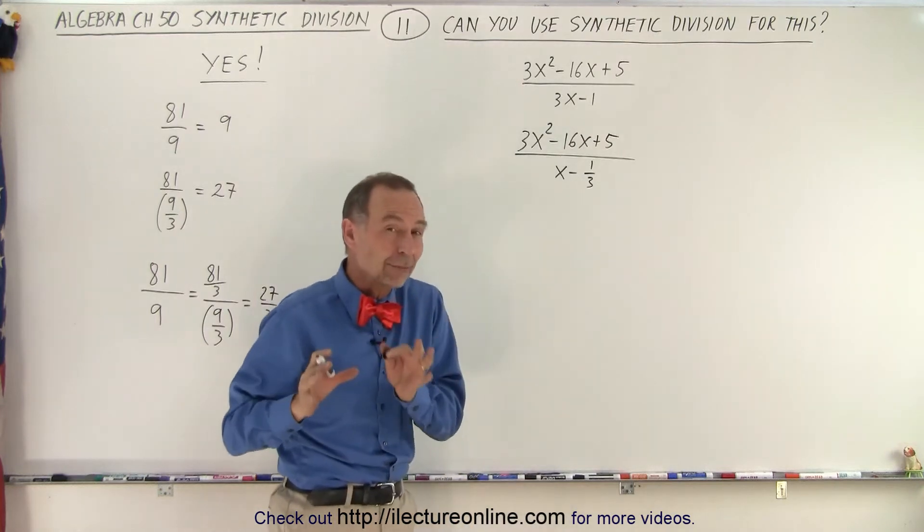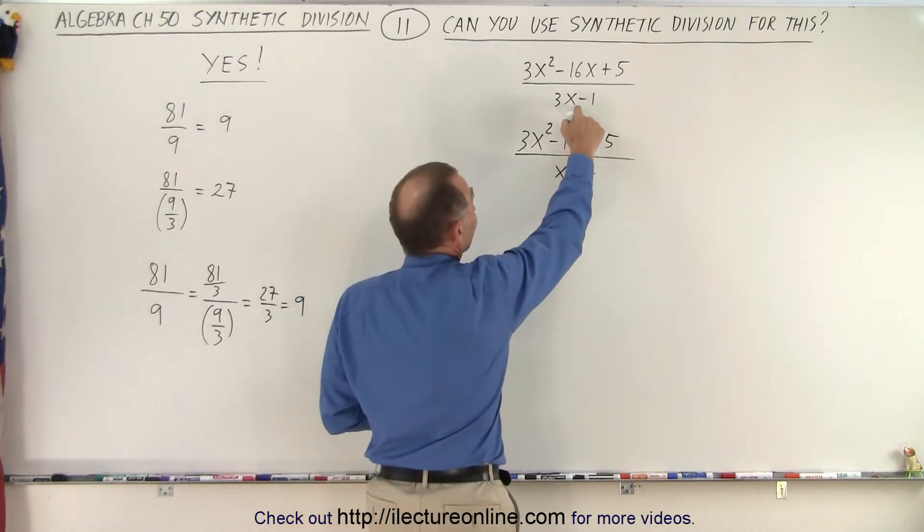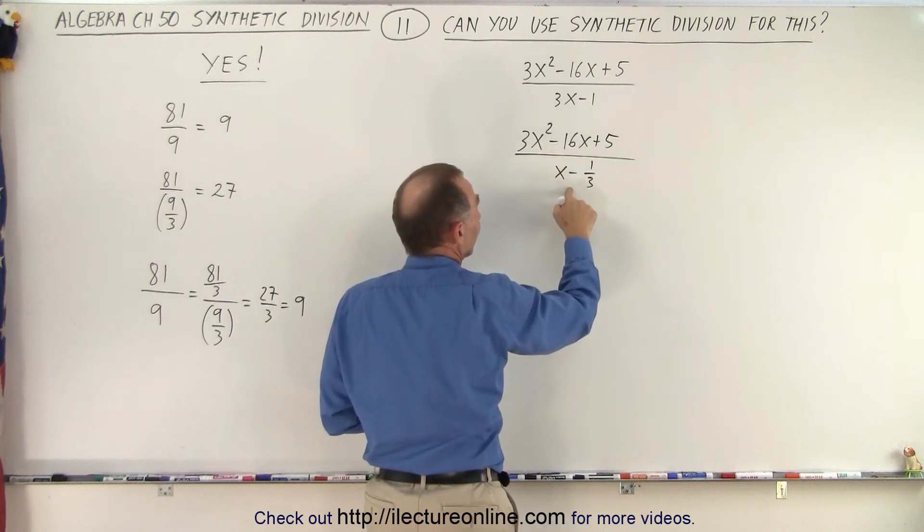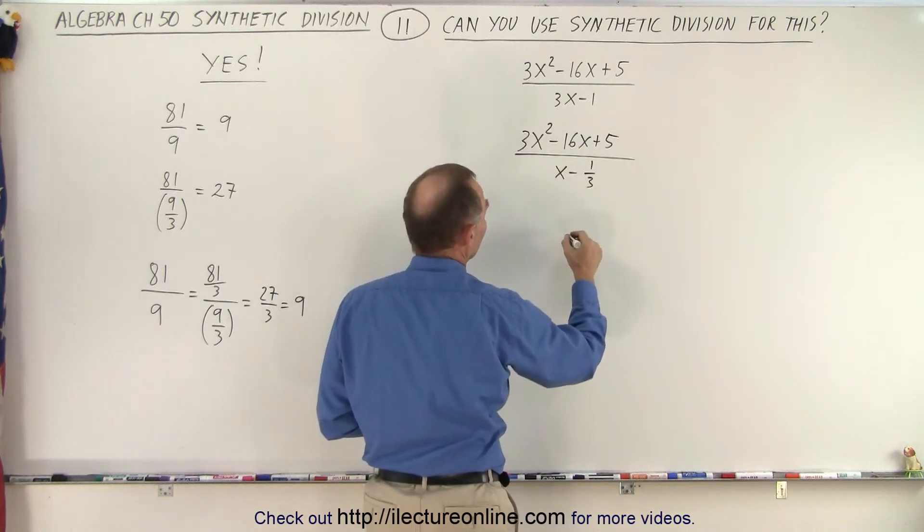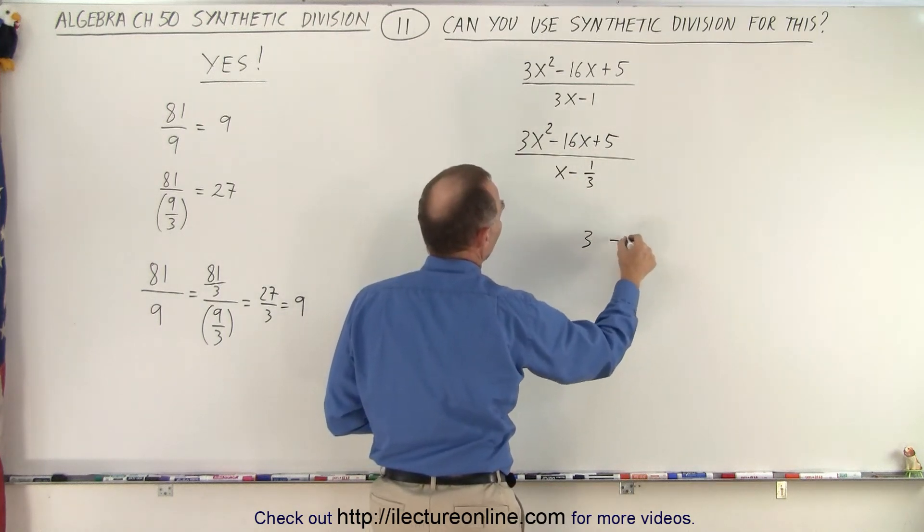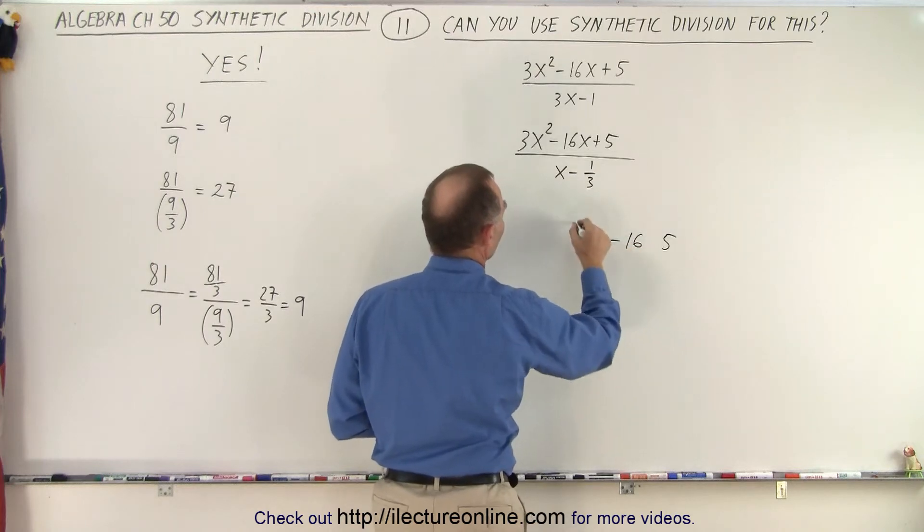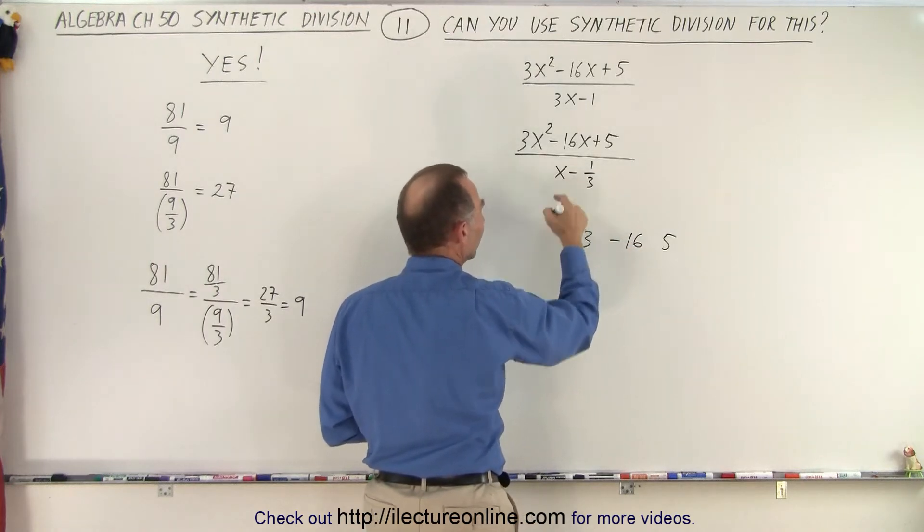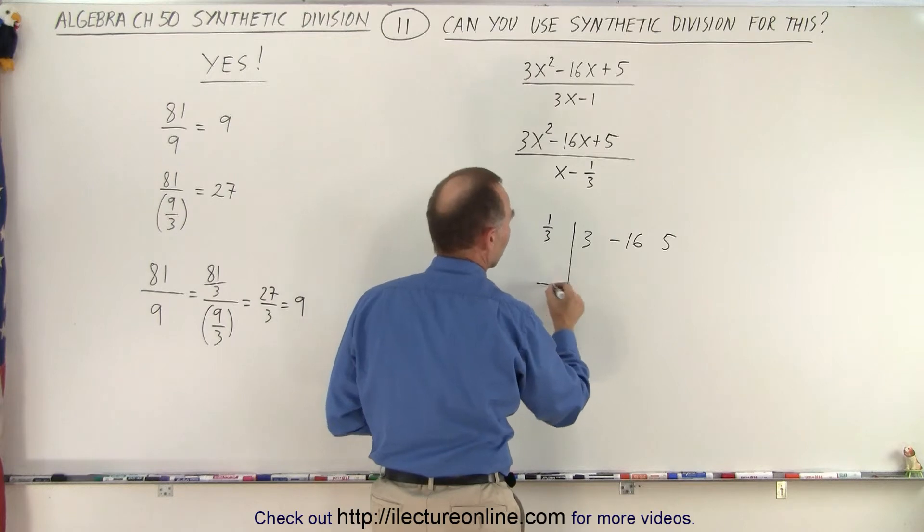Remember, I'm going to get an answer that's 3 times as big as it should be because I divided the denominator by 3 to get this. So I write down the coefficients. So I get 3 minus 16 and 5. The number here is going to be positive 1 third. And I draw the line here.